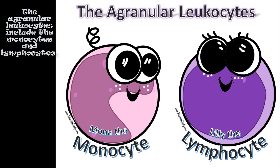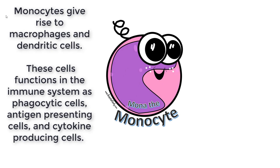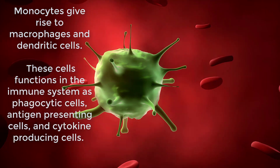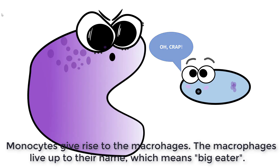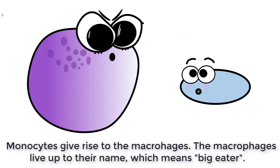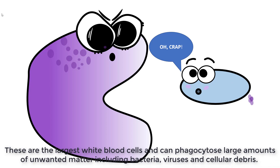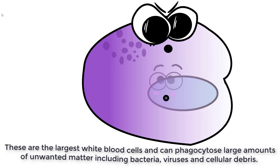Next, we'll look at the agranular leukocytes: monocytes and lymphocytes. Monocytes give rise to macrophages and dendritic cells, which function in the immune system as phagocytic cells, antigen presenting cells, and cytokine producing cells. Macrophages live up to their name, meaning 'big eater' — they are the largest white blood cells and can phagocytose large amounts of unwanted matter, including bacteria, viruses, and cellular debris.